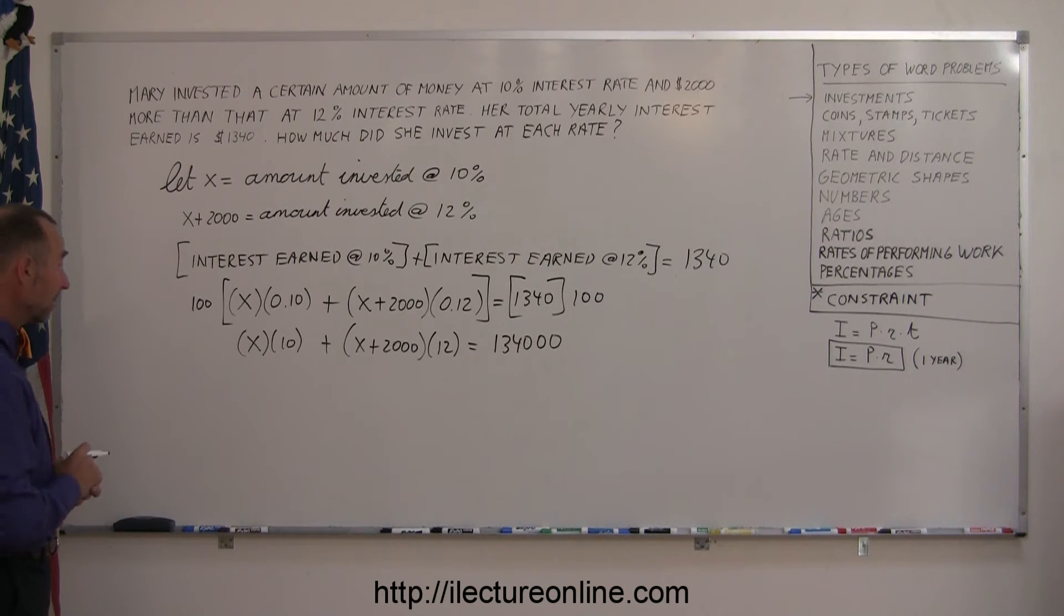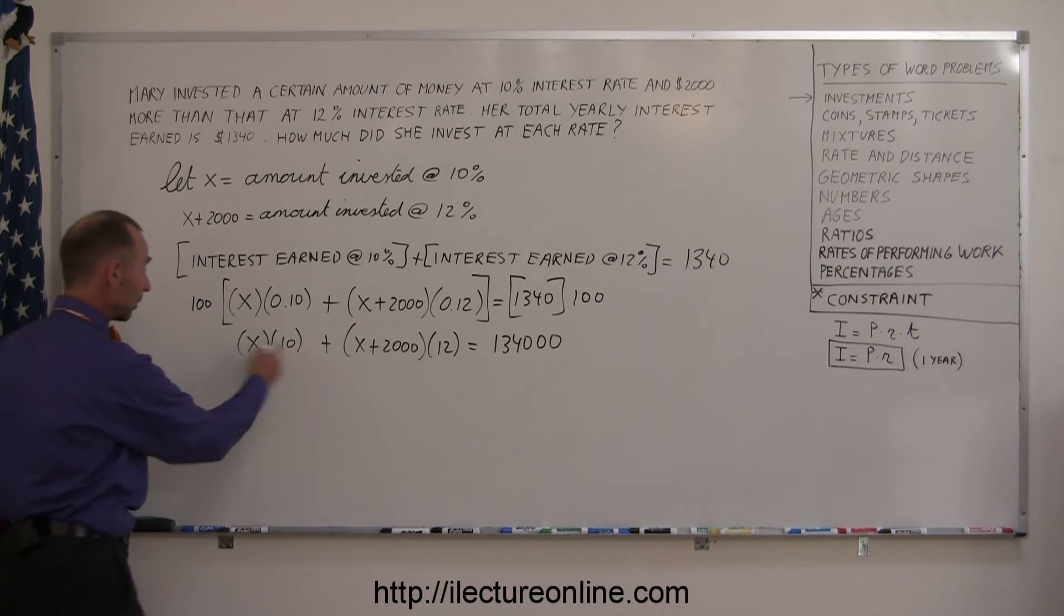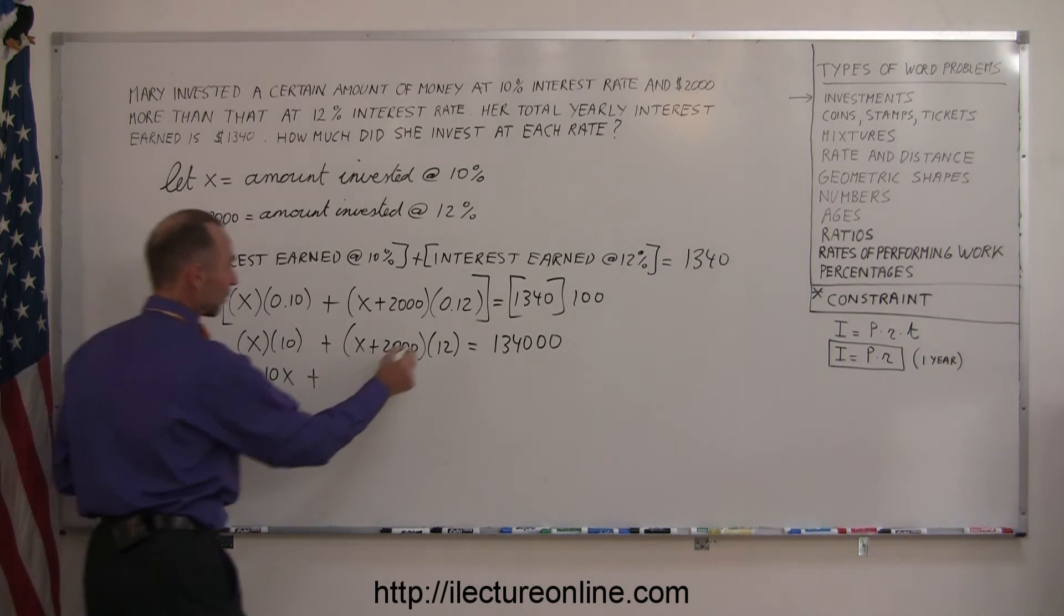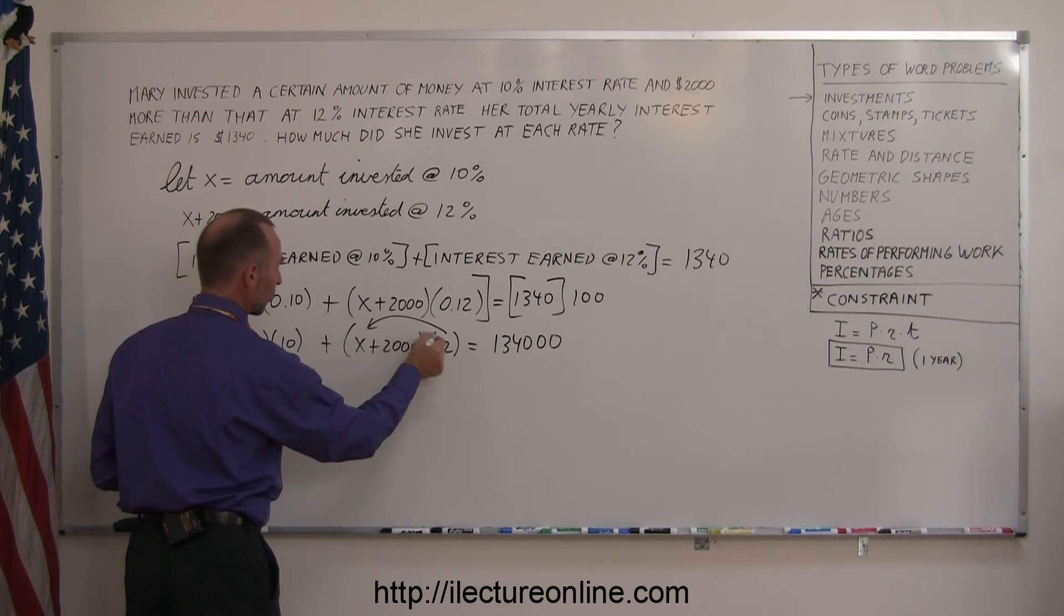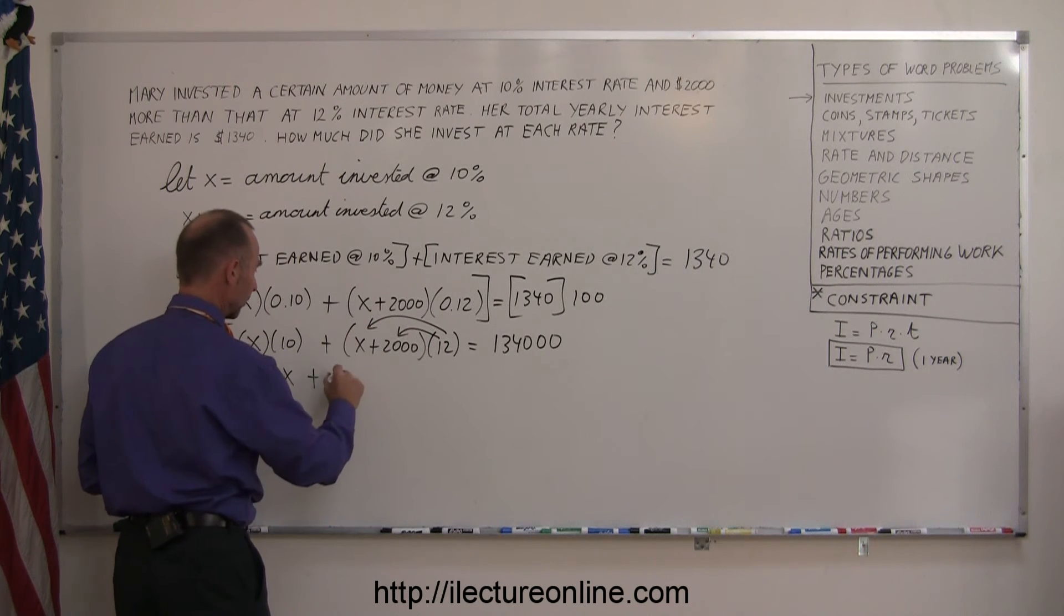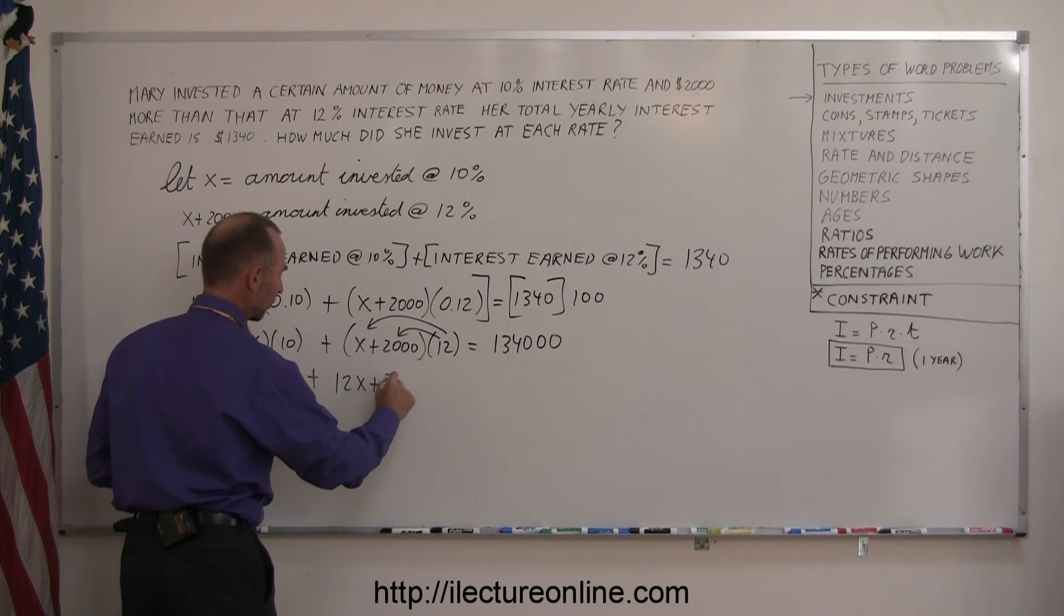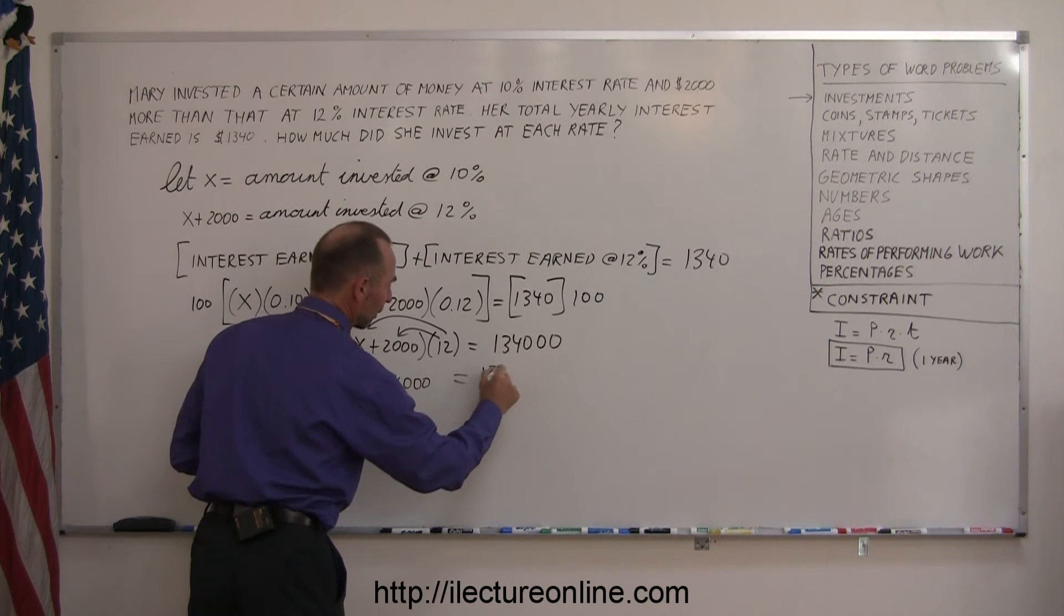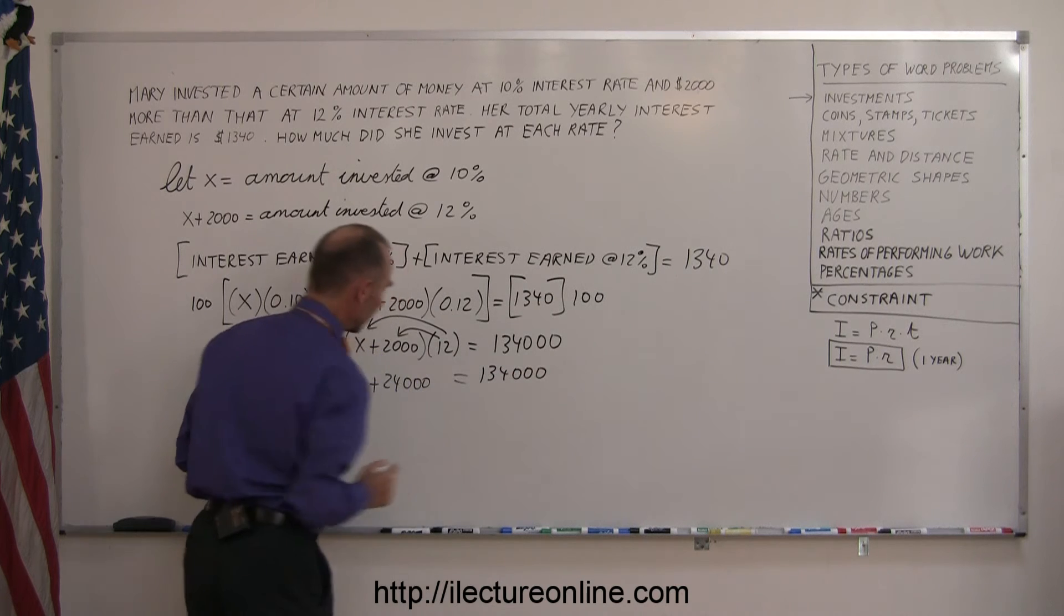Next, I want to get rid of the parentheses by multiplying. x times 10 is 10x. Here I multiply 12 times x and 12 times 2,000, so I get 12x plus 24,000. That adds up to what I have on the right side, 134,000.